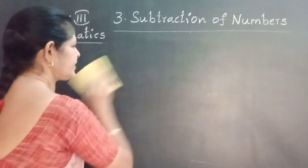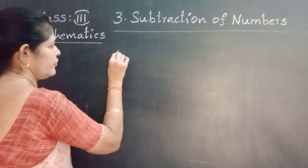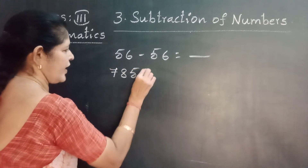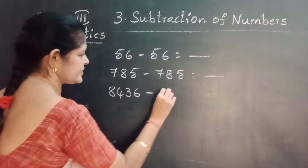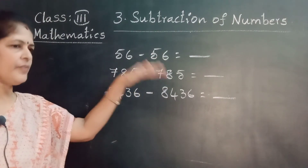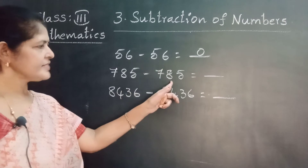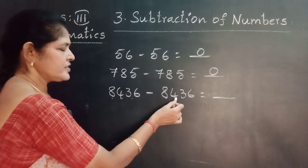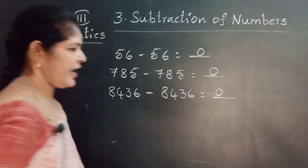Rule three — number subtracted from itself: the difference is zero, no difference. Examples: 56 minus 56, 785 minus 785, 8436 minus 8436. The difference is zero. For 8436: 8000 minus 8000, 400 minus 400, 30 minus 30, 6 minus 6 — all are the same digits, so there is no difference. Understood, three rules?